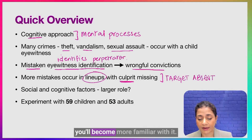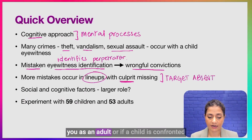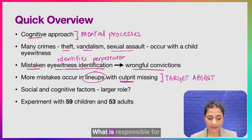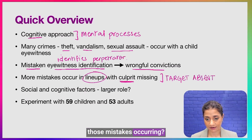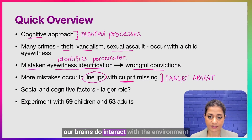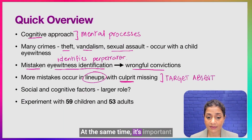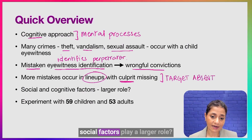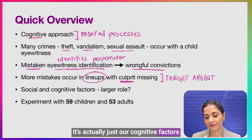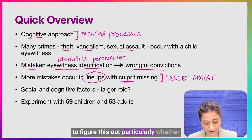When you have a lineup of potential suspects but the actual culprit is not part of that lineup, more mistakes will occur. Those lineups where the culprit is missing are called target absent. When confronted with a lineup, what is responsible for those mistakes occurring? It's not easy to simply separate the social from the cognitive, because our brains interact with the environment and that influences our decision making. It's important to understand whether social factors play a larger role, or whether it is actually internal cognitive factors that lead us to make certain choices.